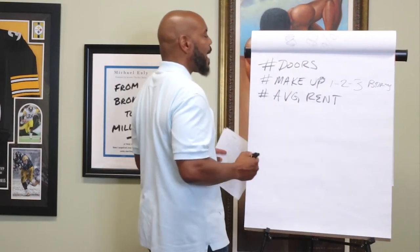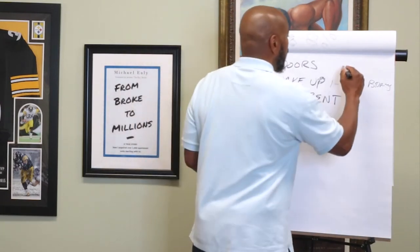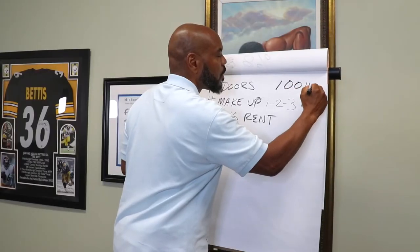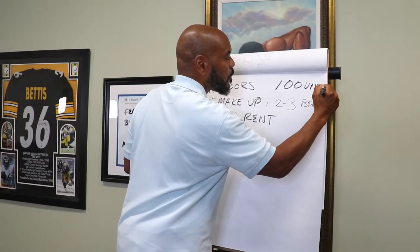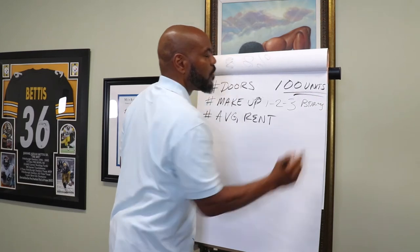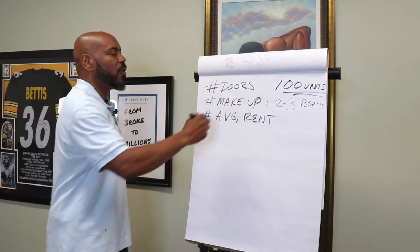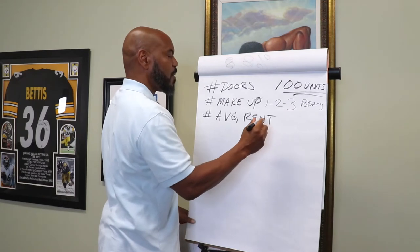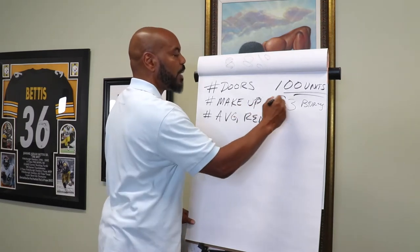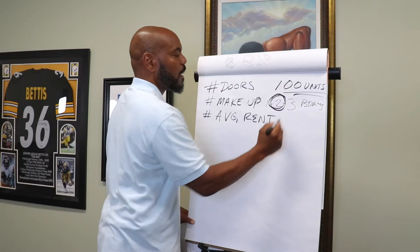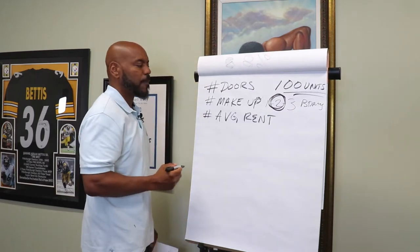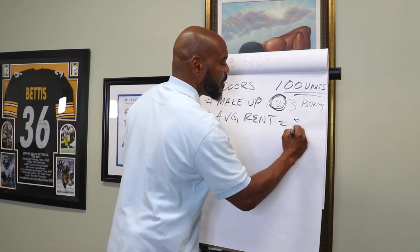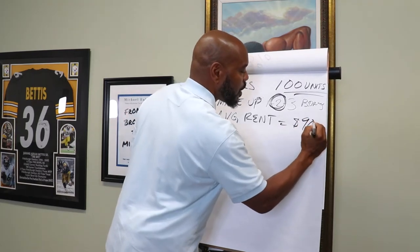So number one: how many doors? In this example we'll say 100 units. And then we'll say on this one the average makeup is all two bedrooms.